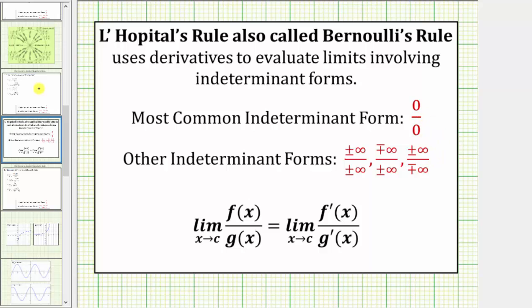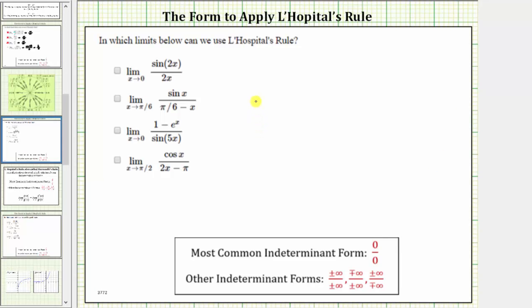Going back to our exercise, we are only checking to see if L'Hopital's rule applies — we will not be determining the limits. Looking at the first limit, we get the limit as x approaches zero of sine two x divided by two x.